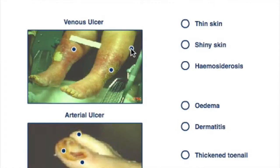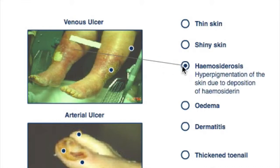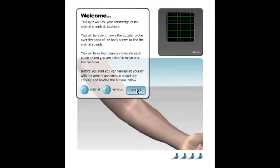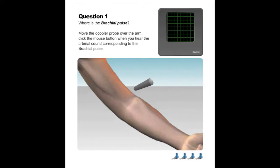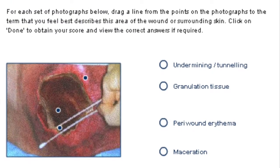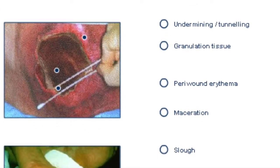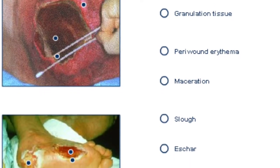It also offers exercises to help you see how to make a differential diagnosis of a lower extremity wound and then practice with various types of wounds. For instance, this activity is a quiz that tests your knowledge about arterial sounds and locations, and this activity asks the user to match the wound or peri-wound skin area to its correct description.